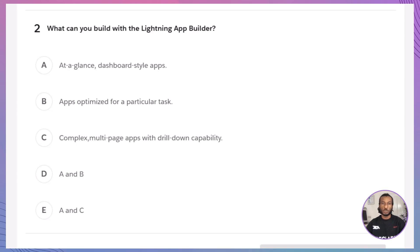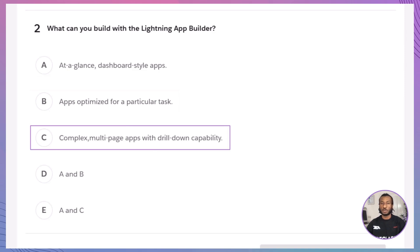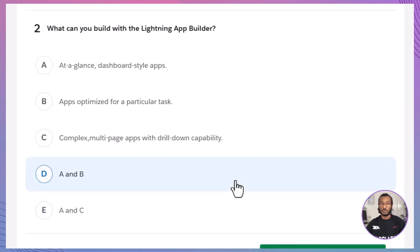Question 2: What can you build with the Lightning App Builder? A. At-a-glance, dashboard-style apps. B. Apps optimized for a particular task. C. Complex, multi-page apps with drill-down capability. D. A and B. E. A and C. The correct answer is D, A and B. With the Lightning App Builder, you can create dashboard-style apps that provide at-a-glance information and apps optimized for specific tasks, such as expense tracking. However, building complex, multi-page apps with drill-down capabilities isn't typically within the scope of the Lightning App Builder, making option D the best choice.